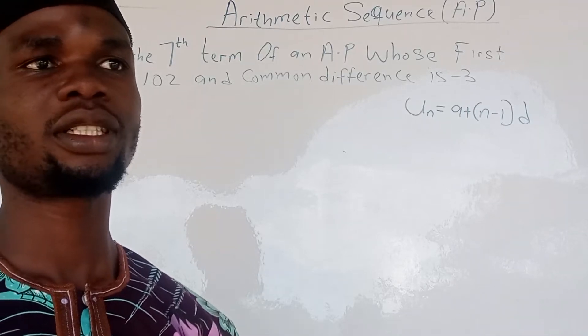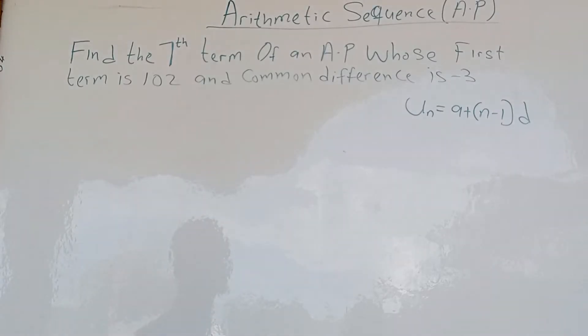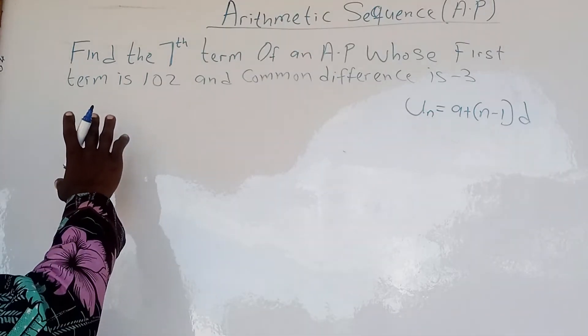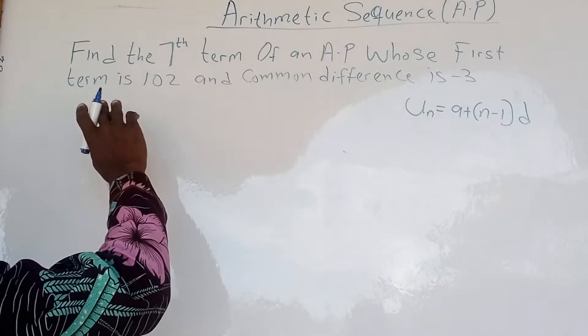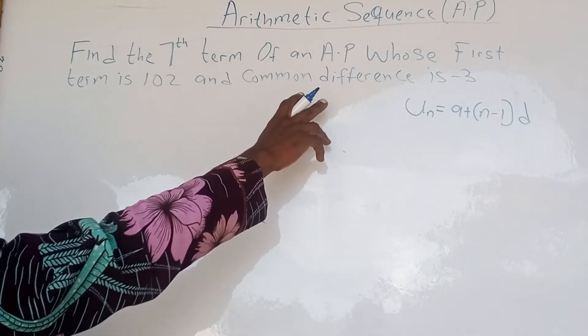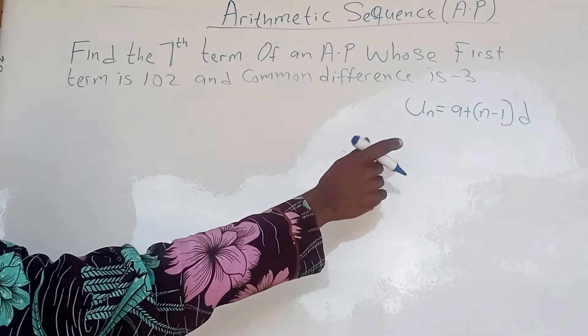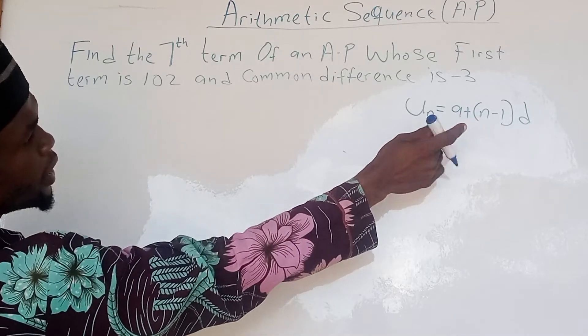Today's topic is arithmetic sequence, which is arithmetic progression. Example: find the seventh term of an AP whose first term is 102 and common difference is minus 3. This is our formula for AP.